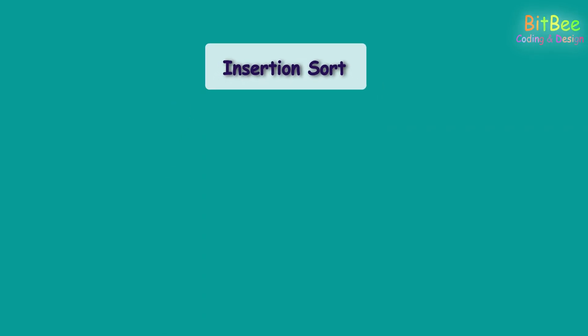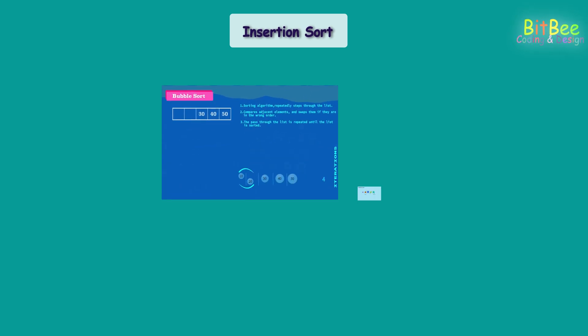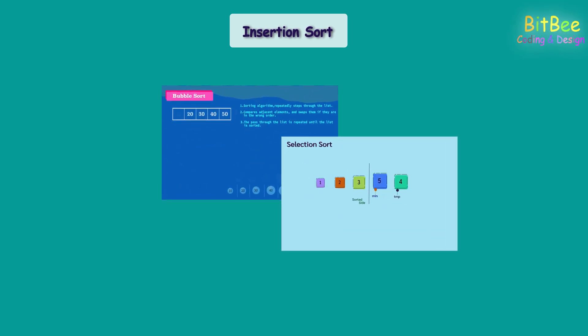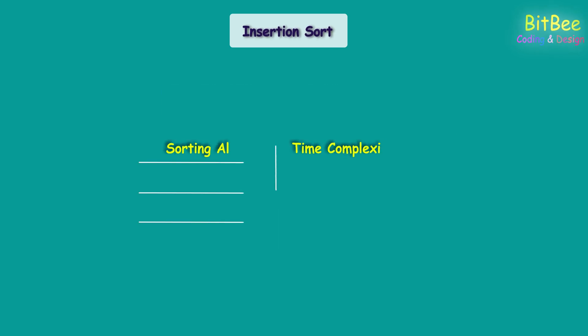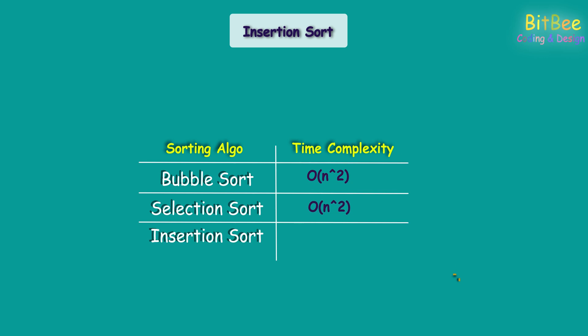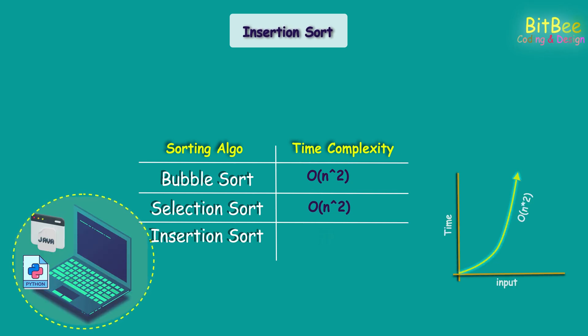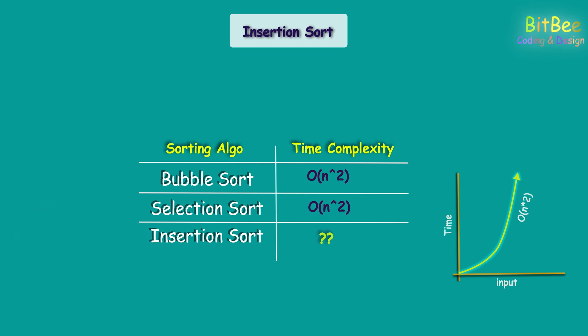In our previous videos, we already explored bubble sort and selection sort algorithms. If you haven't visited those videos, I recommend you watch them once and come back here. You can find the links here or in the description. We have already explored the time complexity of bubble sort and selection sort algorithms, and the time complexity for them is big O of N squared. So today let's explore the time complexity of the insertion sort algorithm and its implementation.